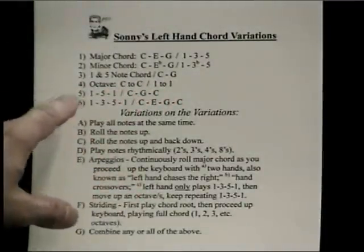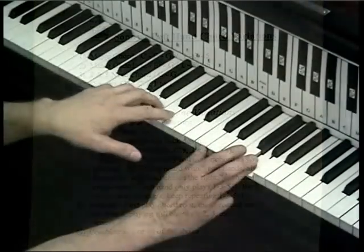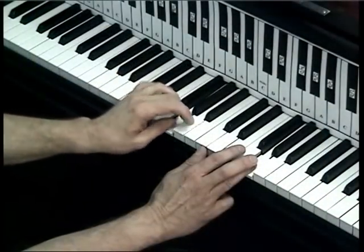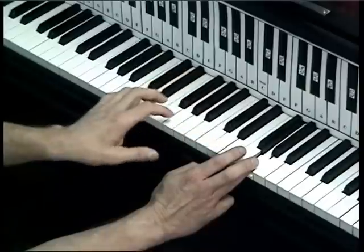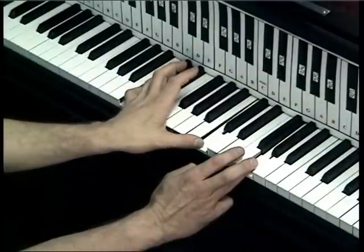Another way of playing it is to play it as an octave. Now, octave means 8, so let's count again: 1, 2, 3, 4, 5, 6, 7, 8. A C and a C would be considered an octave. Another way of saying it would be 1 to 1. It's the 1 to the 8, or the 1 to 1 — so that's an octave.